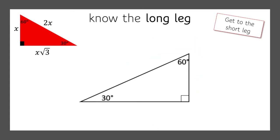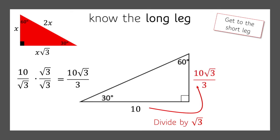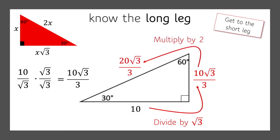We'll try another one. We know the long leg is 10. So we need to get to the short leg — that's 10 divided by root 3. Again, you can't have a root in the denominator, so we're going to have to rationalize the denominator. So we get 10√3 over 3 as the short leg. And then from there, we can double that to get the hypotenuse: 20√3 over 3.